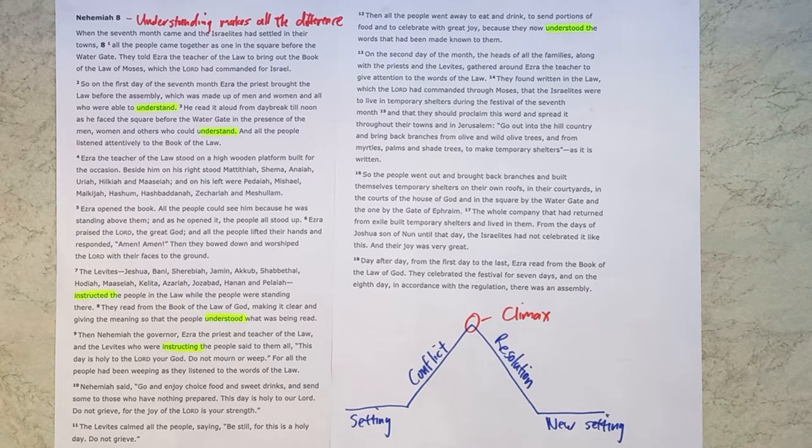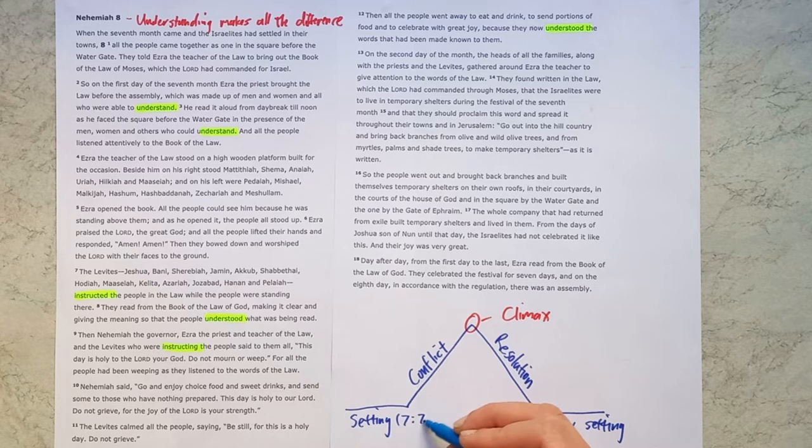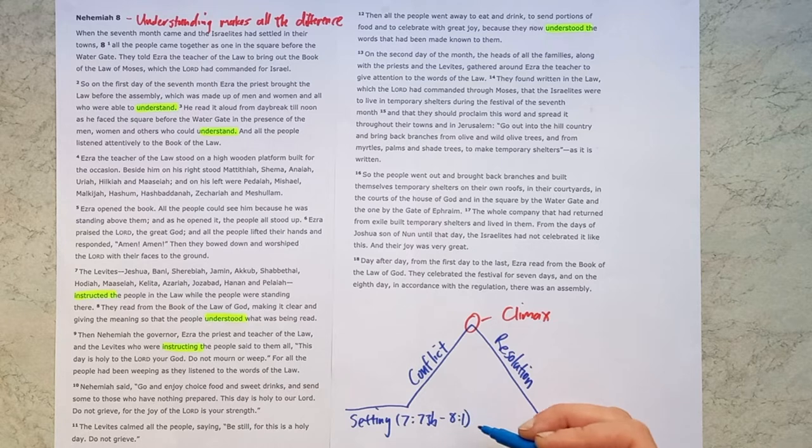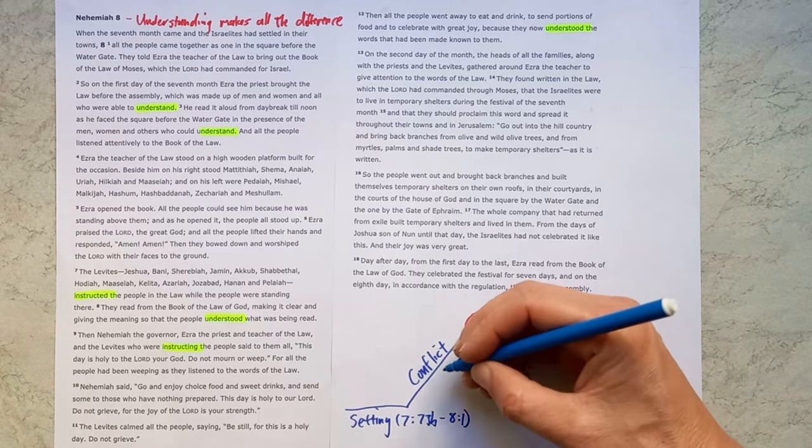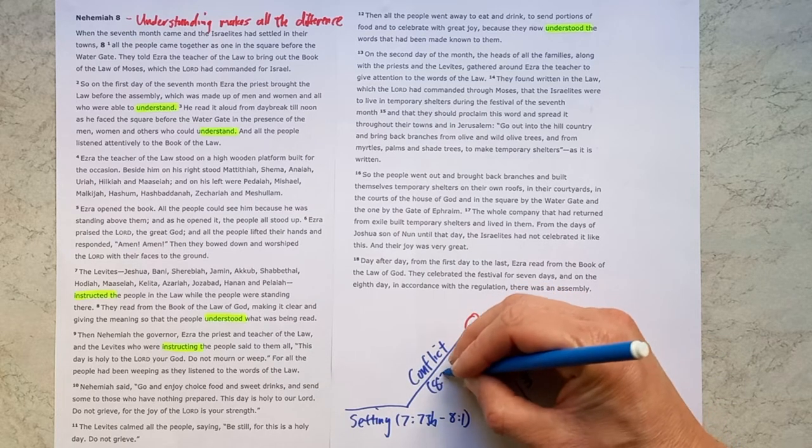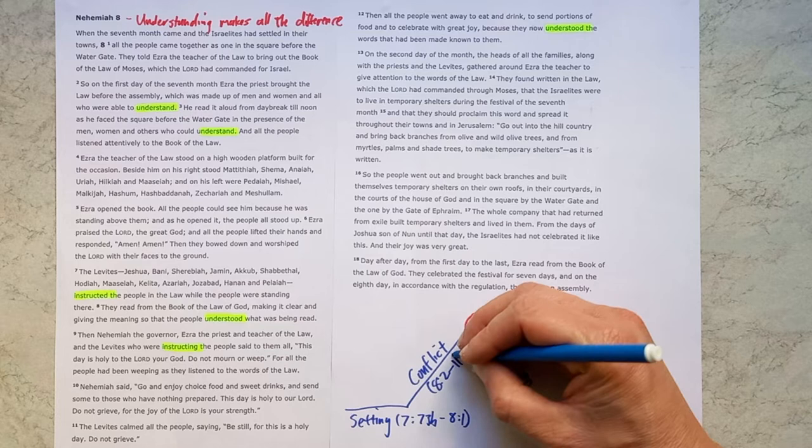In this section, I saw the setting given in 7 verse 73b and 8 verse 1, where we see Jerusalem's walls are now completed and the whole community gather to hear the word of God, the law of God being read. But the conflict builds in chapter 8 verse 2 all the way through to verse 11.